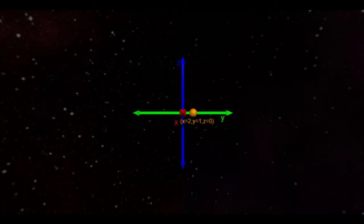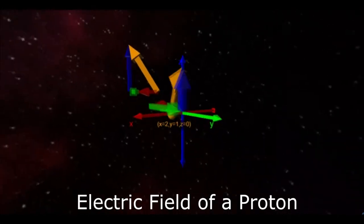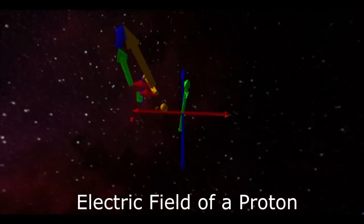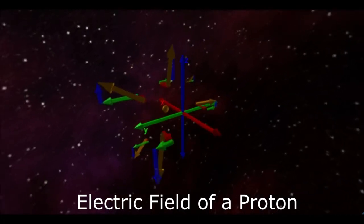For example, let's suppose we place a proton at 2, 1, 0. The electric field of this proton will point outward away from the proton. Each of these electric field vectors has a different X component, Y component, and Z component based on its position relative to the proton.